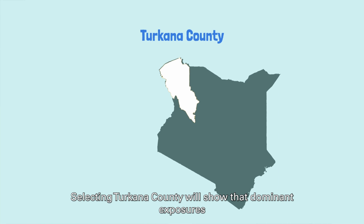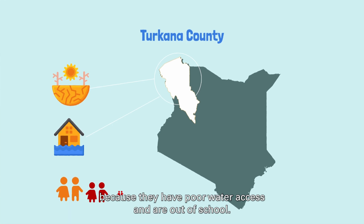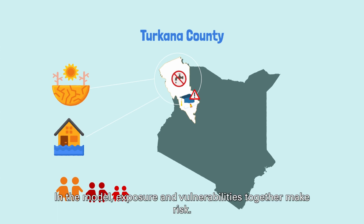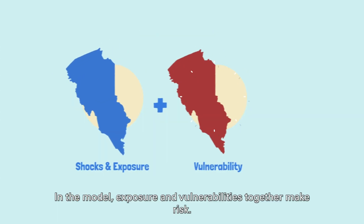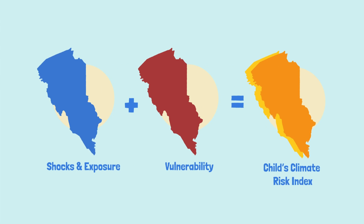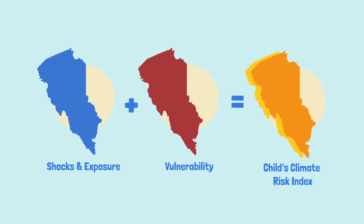Selecting Turkana County will show that dominant exposures are droughts and floods, and that a lot of children are vulnerable because they have poor water access and are out of school. In the model, exposure and vulnerabilities together make risk — the risk in that county is therefore really high.